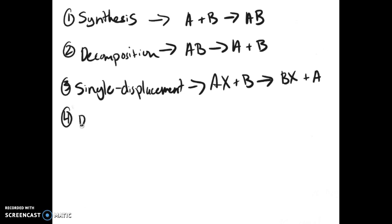Now the next type builds off of that, which is a double displacement, double replacement, whichever one you want to call it. Which is where you'll have something like AX plus BY. And the A and B will replace each other. So then you'll end up with BX plus AY.